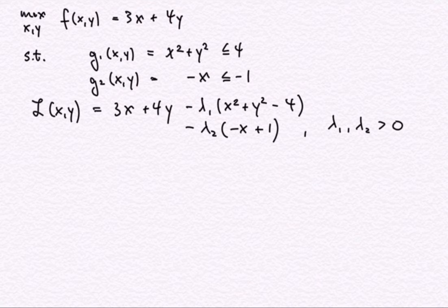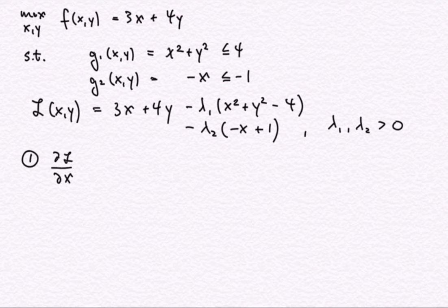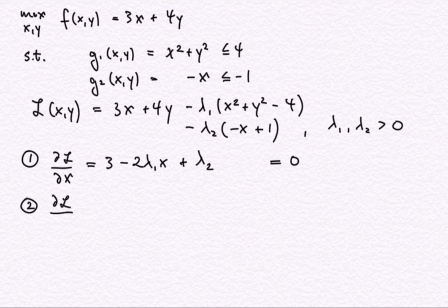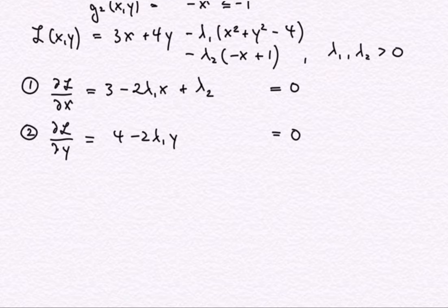We can list the four resulting Kuhn-Tucker conditions, numbered for reference. The first two involve partial derivatives of the Lagrange auxiliary function with respect to the choice variables x and y, set equal to zero. The partial derivative with respect to x is 3 minus 2λ₁x plus λ₂ equals zero, and the partial derivative with respect to y is 4 minus 2λ₁y equals zero. These are identical to conditions under equality constraints.